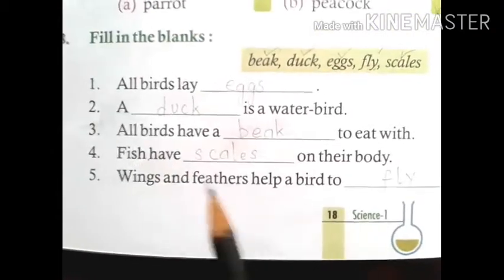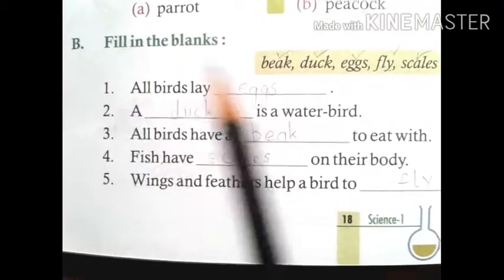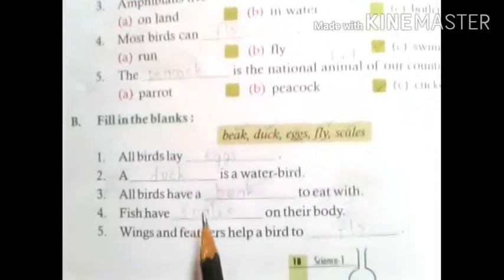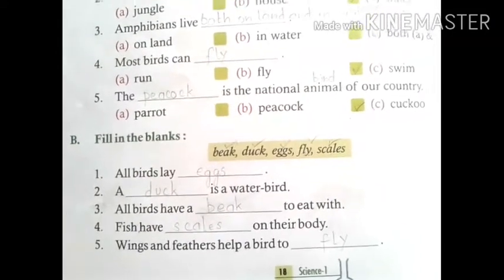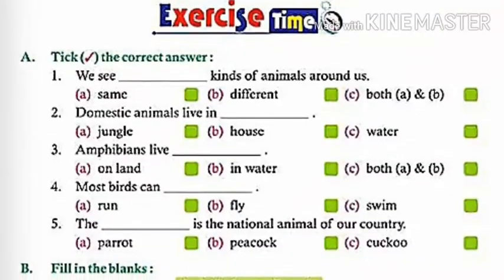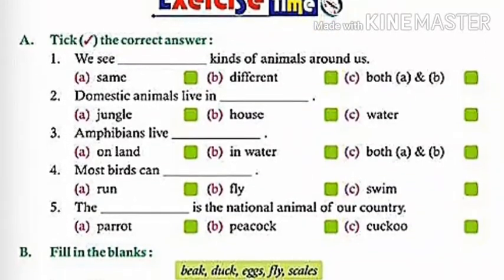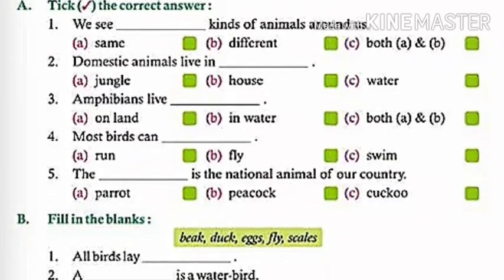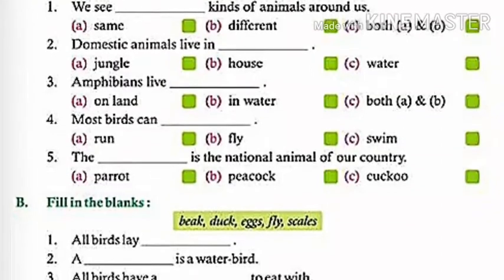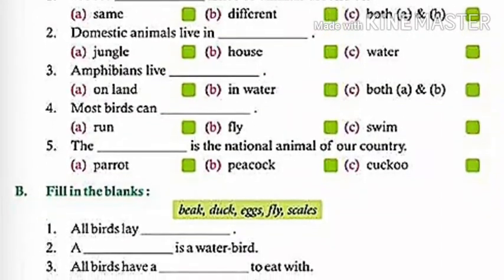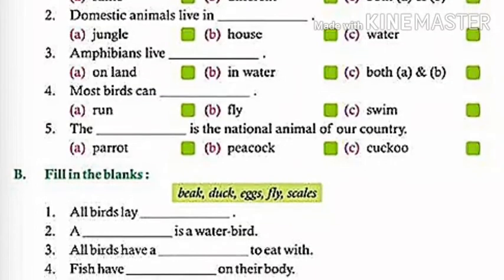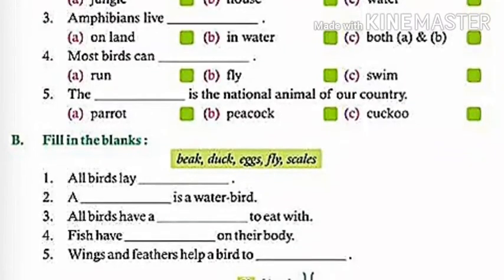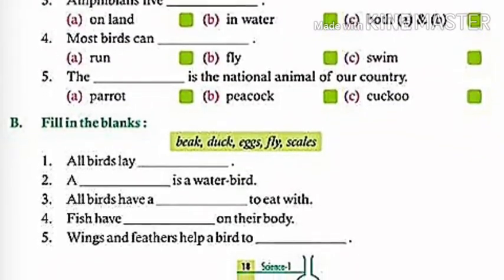We are done with exercise A, take the correct answer, and exercise B, fill in the blanks. Learn all these answers from exercises A and B that we have already solved. Write it, say and write. Learn all these answers properly and don't make the book untidy. Thank you students. Bye.